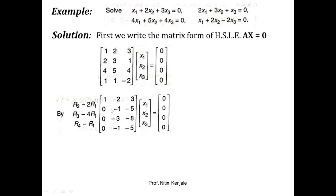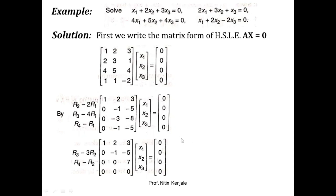We first perform R2 minus 2R1, R3 minus 4R1, and R4 minus R1, making elements at positions a21, a31, and a41 become zero. Next, we perform R3 minus 3R2 and R4 minus R2, making elements at positions (3,2) and (4,2) become zero.